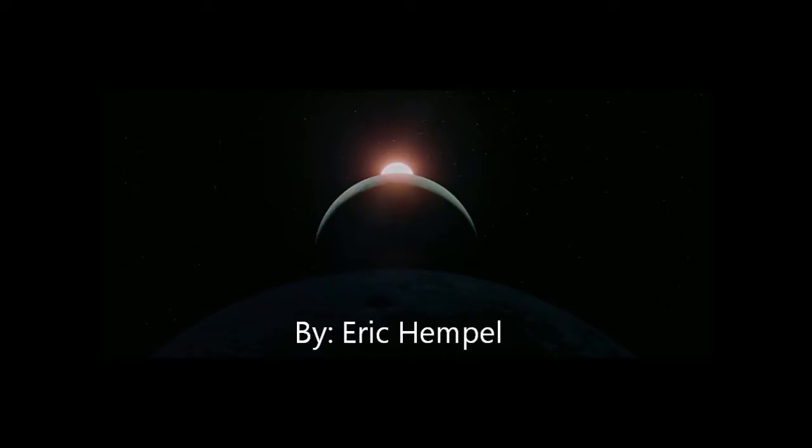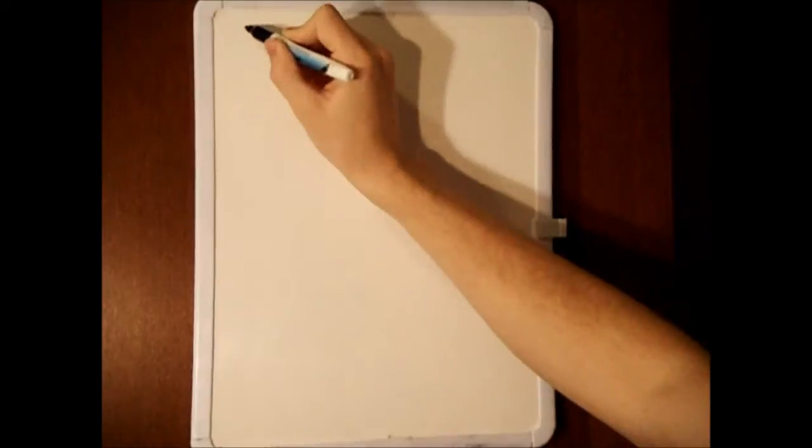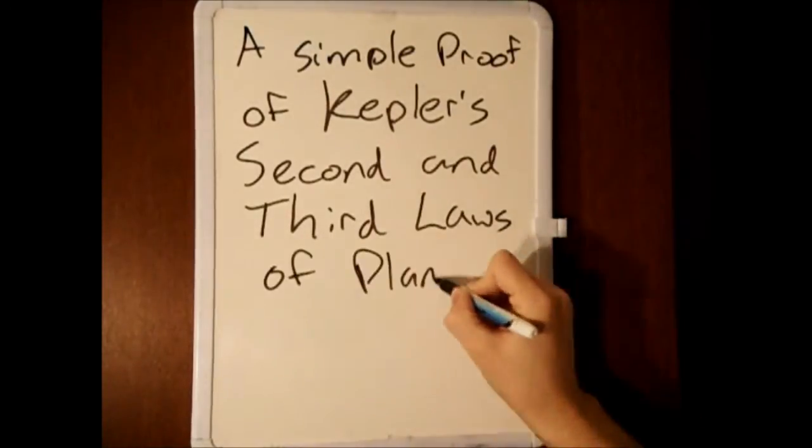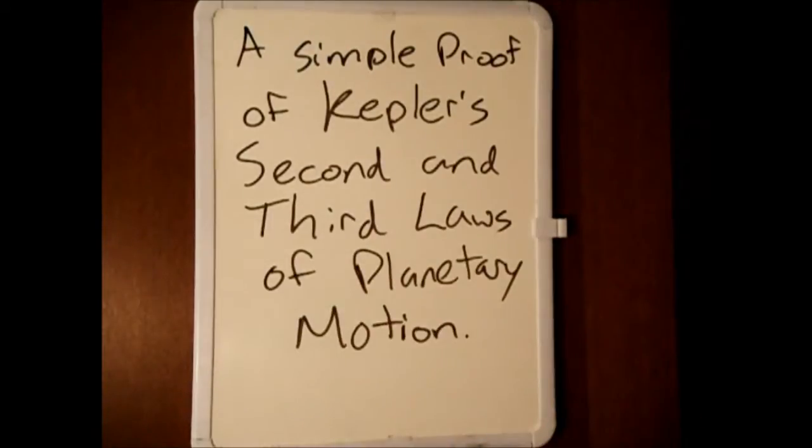Space, the final frontier. These are the voyages of the starship Enterprise. This is actually a simple proof of Kepler's second and third laws of planetary motion.